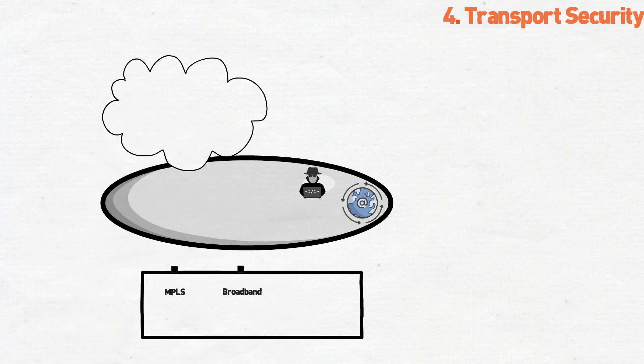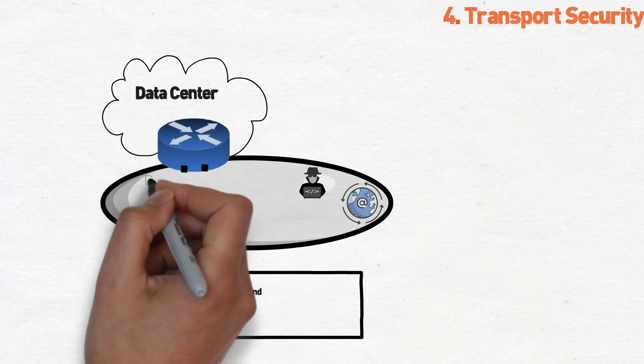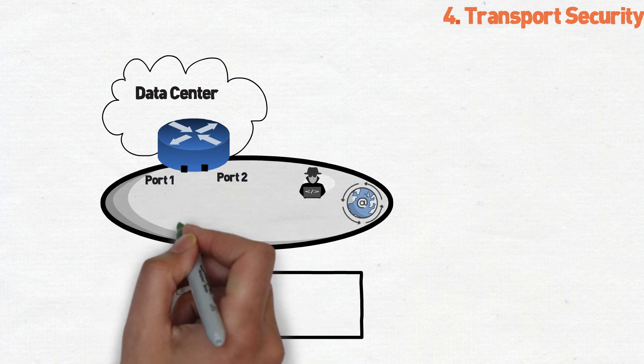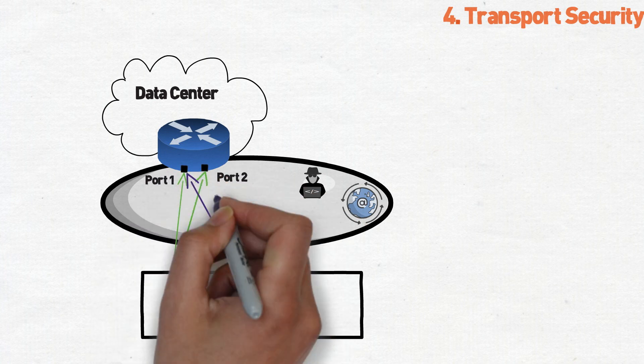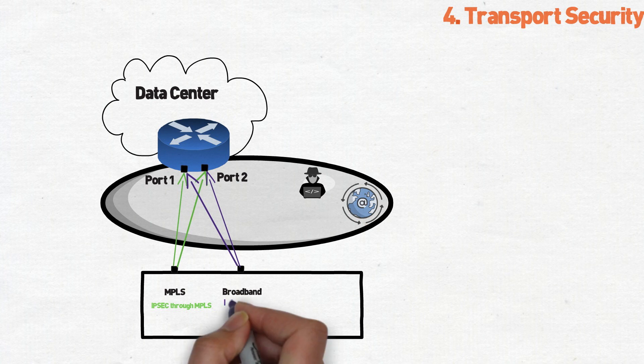For starters, you need to make sure you're utilizing a VPN anytime you're accessing private resources across a WAN. This means both private circuits and direct internet access, like broadband or LTE cards. In a common scenario with one MPLS and one broadband connection, this means having at least one IPsec tunnel through each WAN port. If your data center has redundant ports or paths, you'll also need redundant IPsec tunnels to each port.